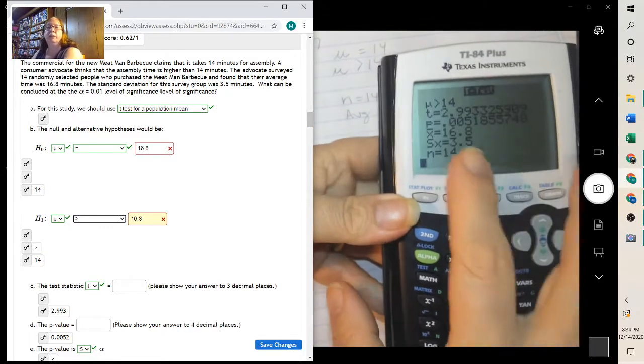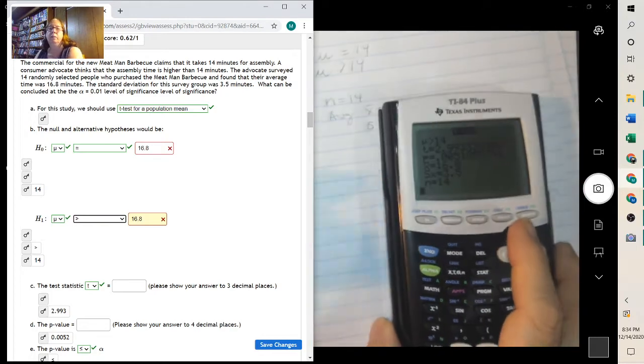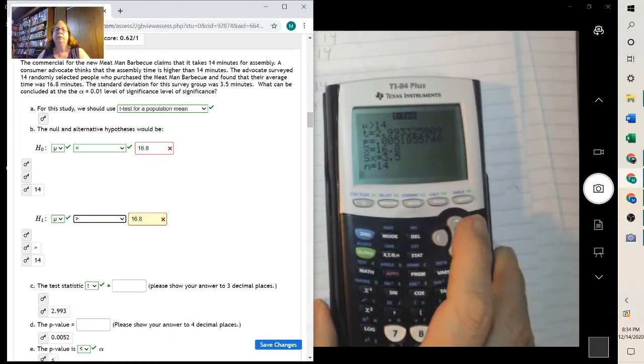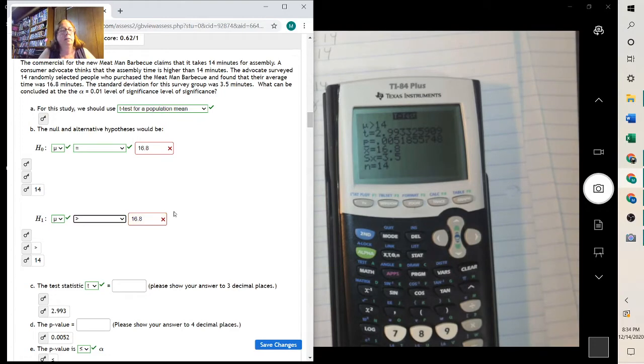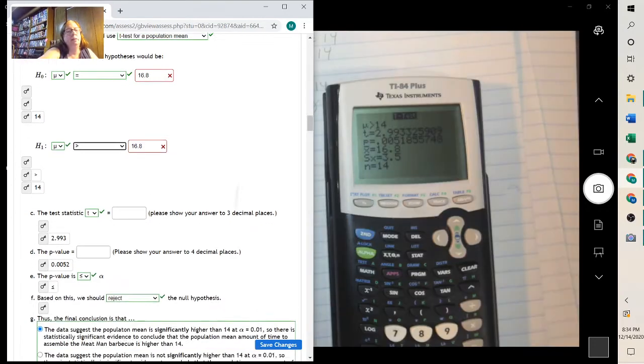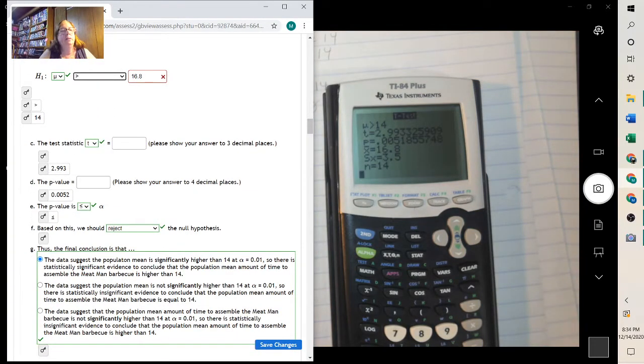And it gives you your t-value, which matches right here, 2.993 and 0.0052. Since the p-value is less than or equal to alpha, we reject it. And the data suggests the population mean is significantly higher.